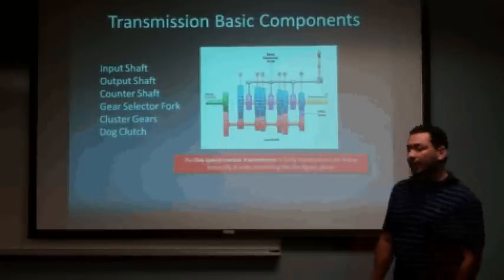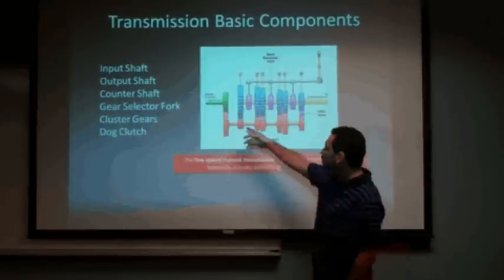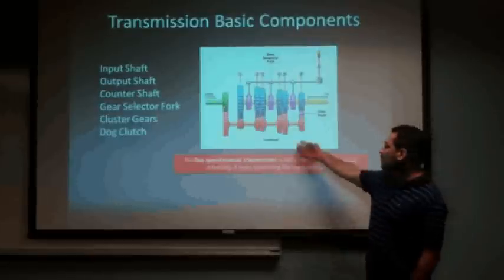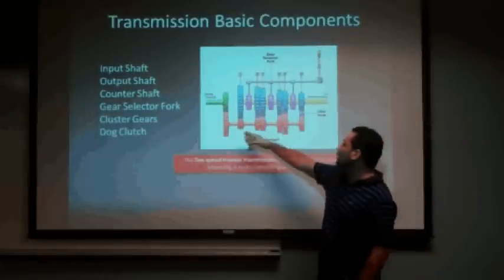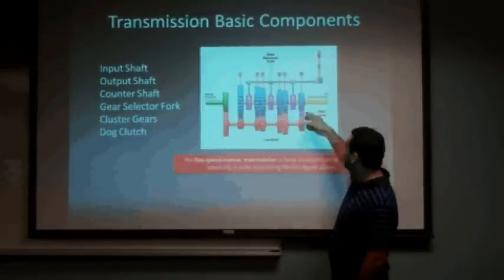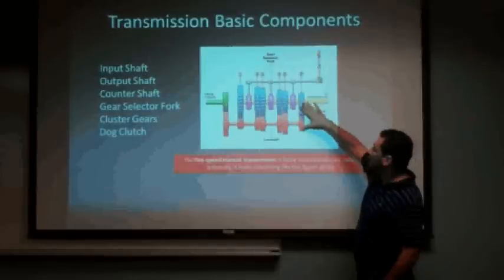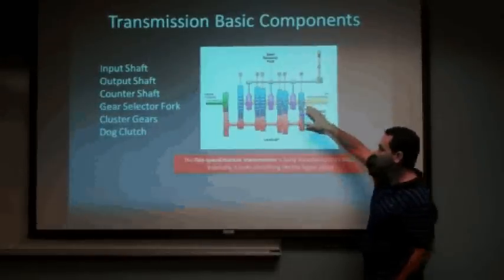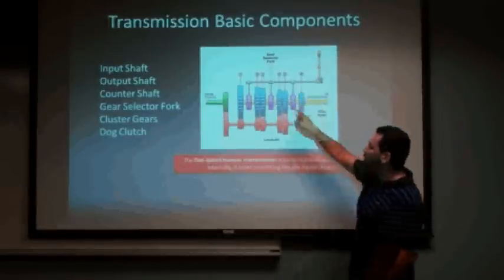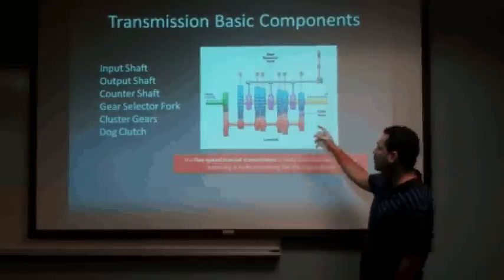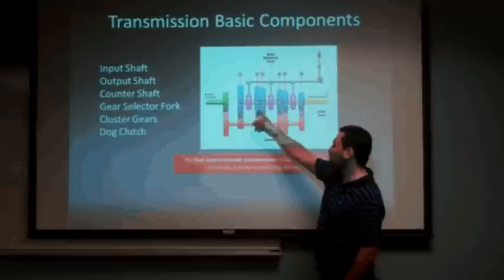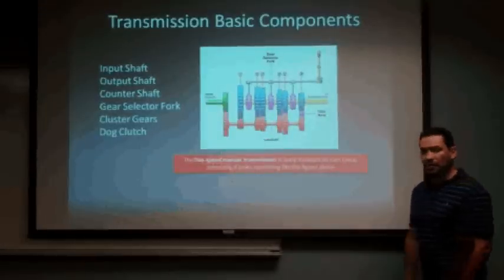I'm going to start talking about the input shaft. The input shaft, seen on green here, is connected to the engine of the car and at the same time transmits power to the lathe shaft, which is also known as the counter shaft. Both the lathe shaft and the output shaft, seen here on yellow, have sets of gears that connect to each other to transmit power. There's also a gear selector fork, seen here, that will select the different gears through the help of the dog clutch. So the dog clutch will interact with the cluster gears to select the desired gear.